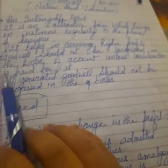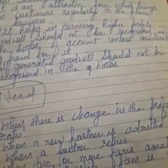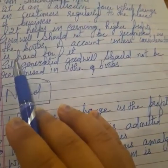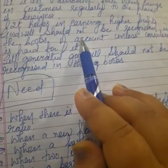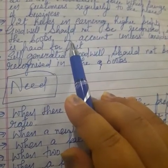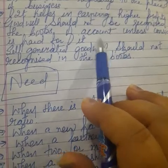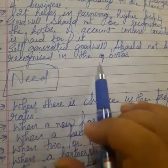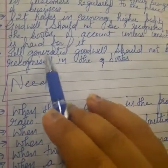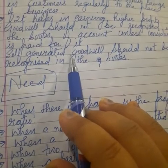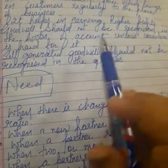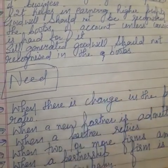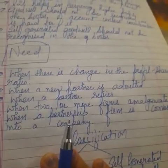Goodwill should not be recognized in the books of account unless consideration is paid for it. That is why self-generated goodwill should not be recognized in the books — because we have created it ourselves and haven't paid any value or consideration for it. If goodwill is purchased, then we record it; otherwise, no value is recorded in the books of account.